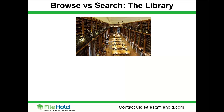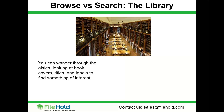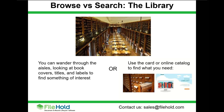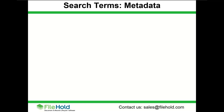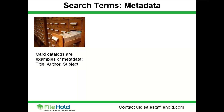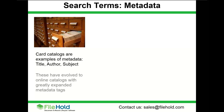Browse and search can be understood through a library analogy. Imagine walking into a library: you can wander through aisles, look at book covers and titles until you find something of interest, or you can use the card or online catalog to find exactly what you need. The card catalog is an example of using metadata. Those old-school card catalogs had three sets: one by title, one by author, and one by subject — so you could find what you were looking for based on those three metadata searches.